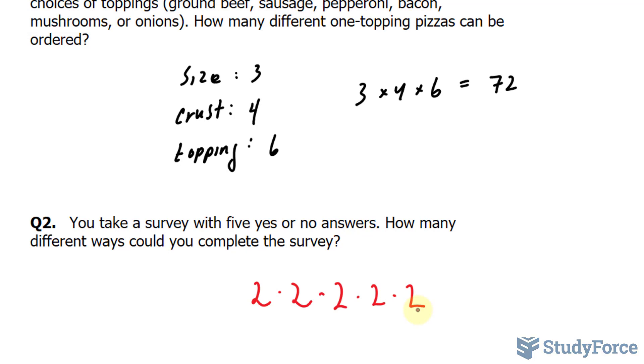So if I multiply two times two times two times two, in other words, two to the power of five, I end up with 32 different ways in which the survey can be filled out. And here's one last question for good measure.